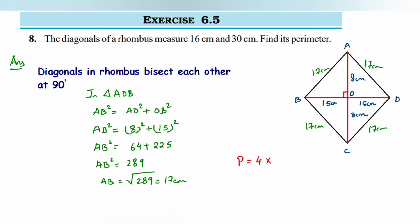Here 4 multiplied by each side is 17 centimeter, so we'll get 17 multiplied by 4. After doing this we'll get 68, so perimeter is equal to 68 centimeter.